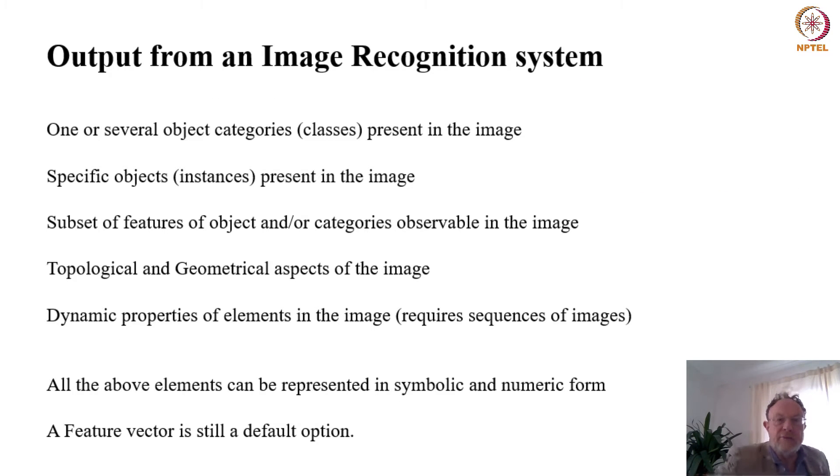Let's then elaborate a little also on the output from this kind of system. Output could be one of several object categories present in the image, it could be specific objects, individuals present there, it could be subsets of features of objects or categories observable in the image. We could also be interested to decide on certain geometrical or topological features are present in the image.